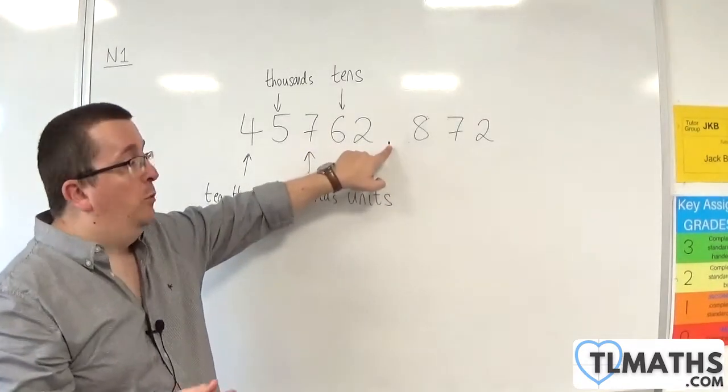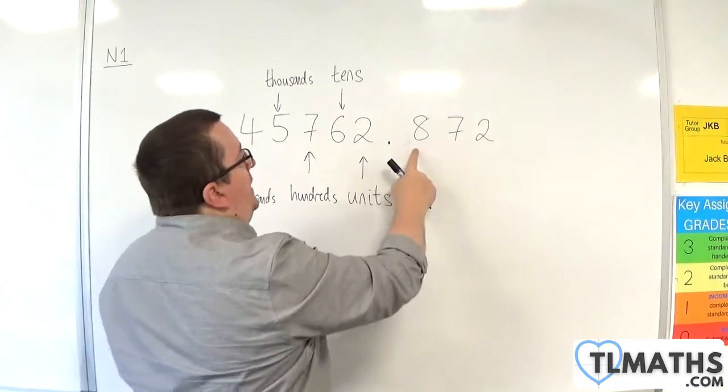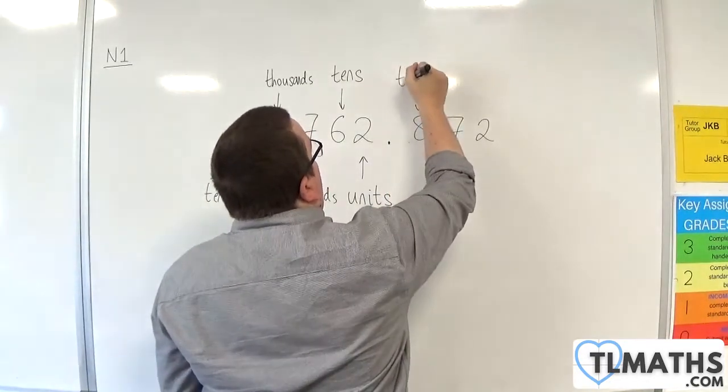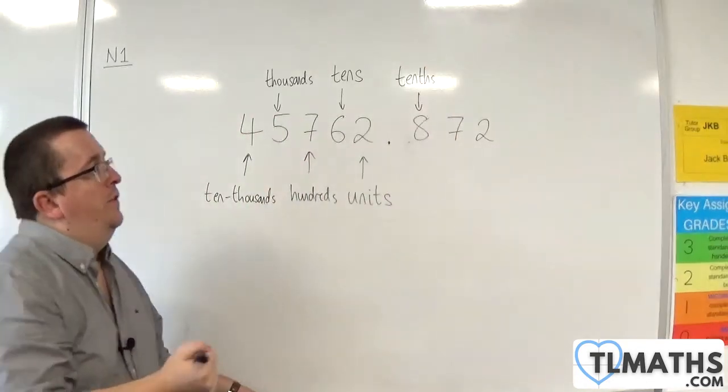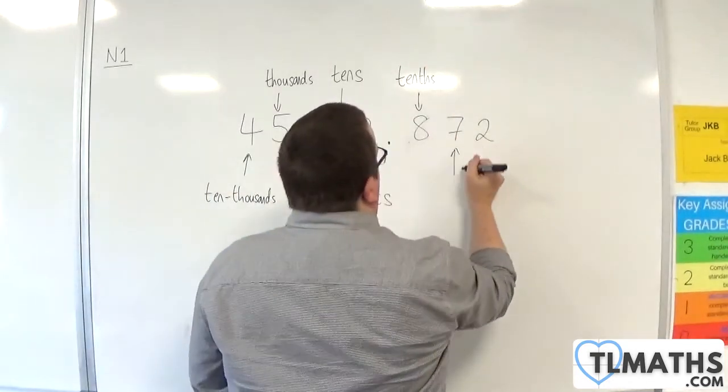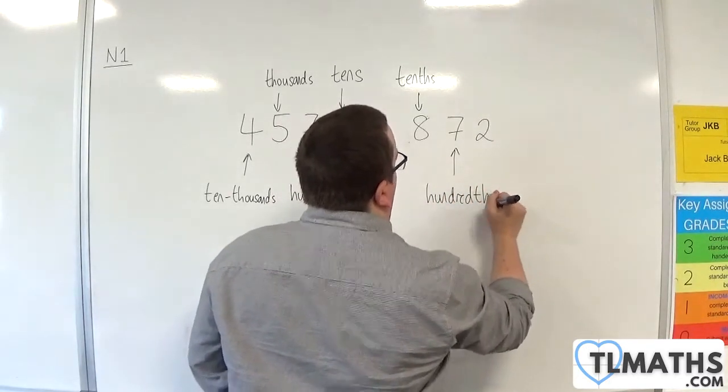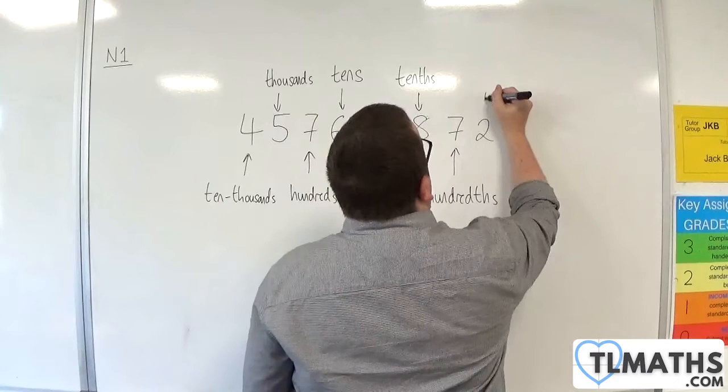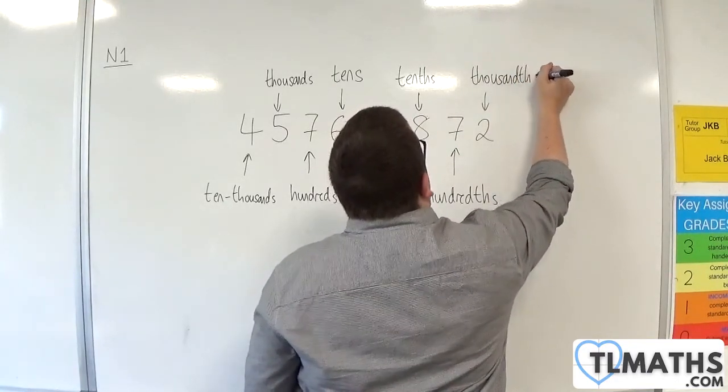So then we have the decimal point, and we have 872. The eight is in the tenths column, then the seven is in the hundredths, and the two is in the thousandths column.